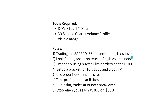We're going to look for buys or sells on retests of high volume nodes or high volume areas. We enter only using buy and sell limit orders on the DOM — no market executions — so you don't sacrifice the spread; you profit from the spread if correct. We'll set up a bracket with a ten-tick stop loss and a five-tick take profit. The ten-tick stop loss is just a safety rail — you never want to take a full stop out. Use those order flow principles discussed earlier to either take profit at or near five ticks, or cut losing trades at or near break even. Stop when you reach plus three hundred or negative three hundred for the day.